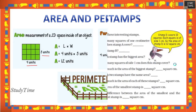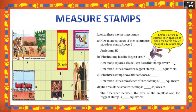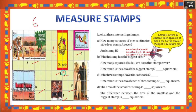Next: measuring stamps. Stamps are placed in squares labeled A, B, C, D, E, F. How many squares of one centimeter side does stamp A cover? Stamp A covers 3 rows × 6 columns = 18 square centimeters. Stamp B covers 4 × 2 = 8 square centimeters.